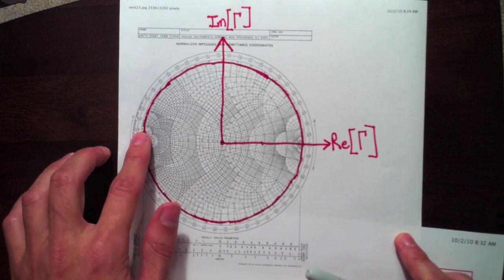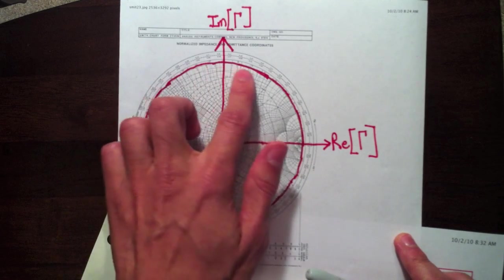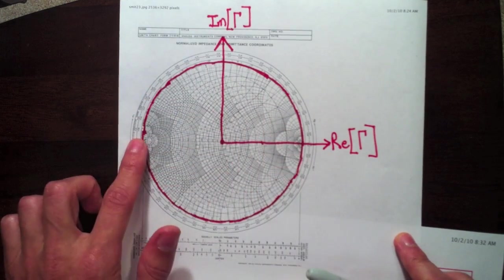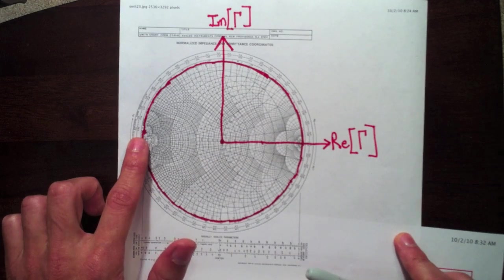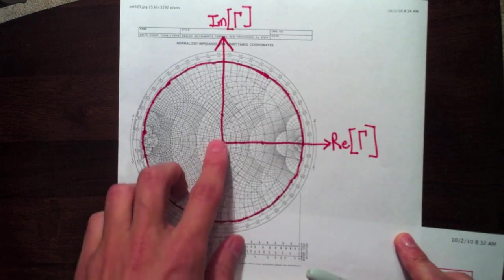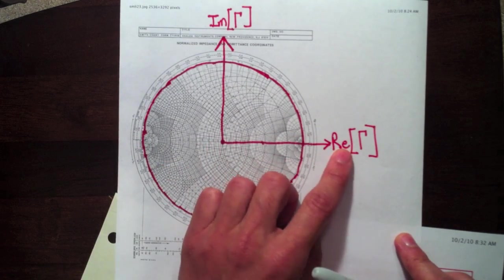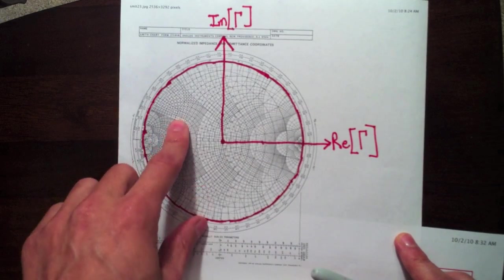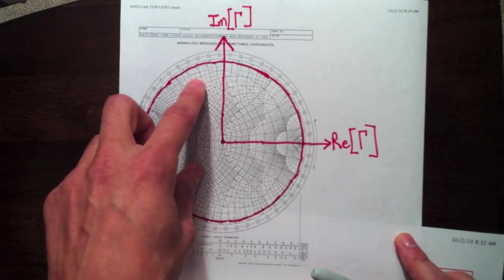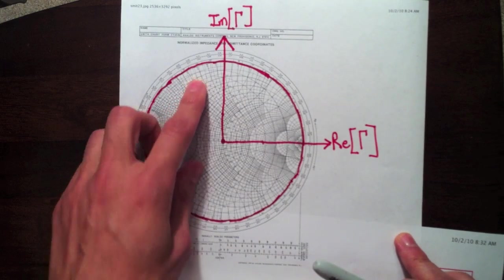So this magnitude of gamma equals one is this outer circle here. And this forms the boundary of the Smith chart. So here we have the real part of gamma axis and the imaginary part of gamma axis. So all the Smith chart does, every point on the Smith chart is just the polar representation of the reflection coefficient.